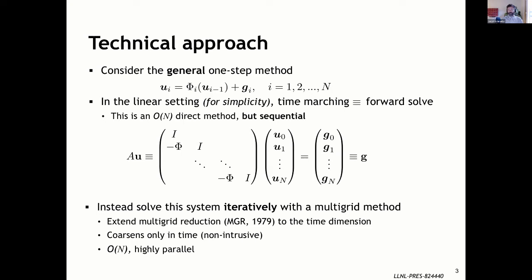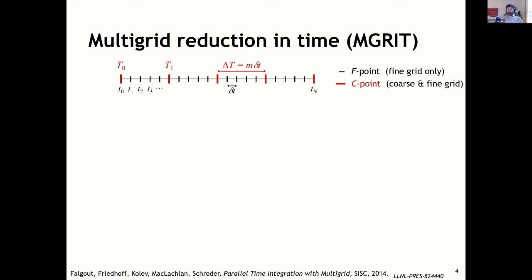Let's take a look at this timeline, where we've taken a set of uniformly distributed points in time and partitioned them into C points and F points. The C points, in red, go on to form the coarse grid. And the F points, in black, live only on the fine grid. The union of C and F together forms your fine grid, and just the C points form your coarse grid. You have a coarsening factor of M, so your coarse grid time step size, big delta-T, is M times small delta-T.